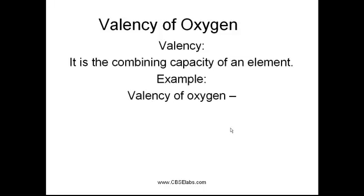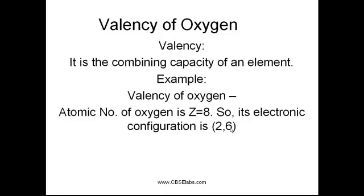Let us start with finding the valency of oxygen. In order to find out the valency of any particular element, we require the atomic number and its electronic configuration. So, here we have the atomic number of oxygen as 8 and the electronic configuration is 2,6.